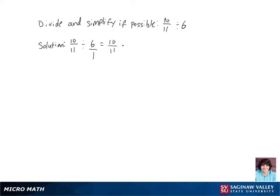Now when we divide by that fraction, we're going to multiply by its reciprocal. So we get 10 over 11 times 1 over 6.